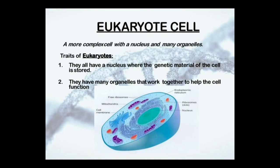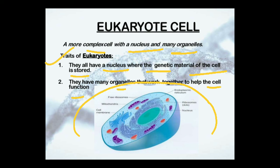Now we will focus on the eukaryotic cell. It is a more complex cell with a nucleus and many organelles. The traits of eukaryotes are that they all have a nucleus where the genetic material of the cell is stored — in contrast to prokaryotes where it was stored in the nucleoid. Here, they have an intact nucleus and many organelles that work together to help the cell function.